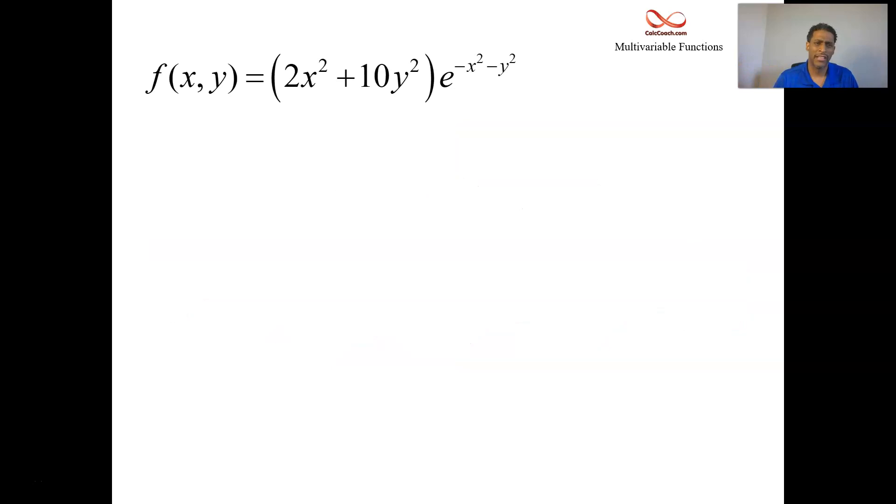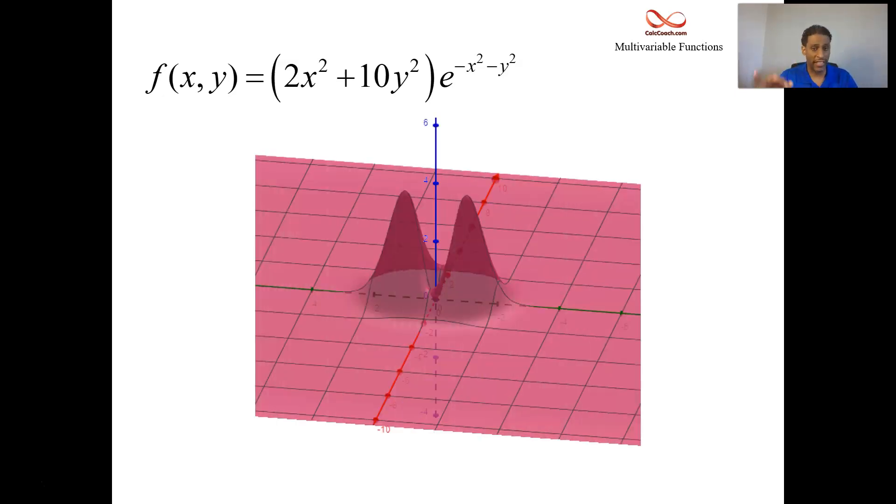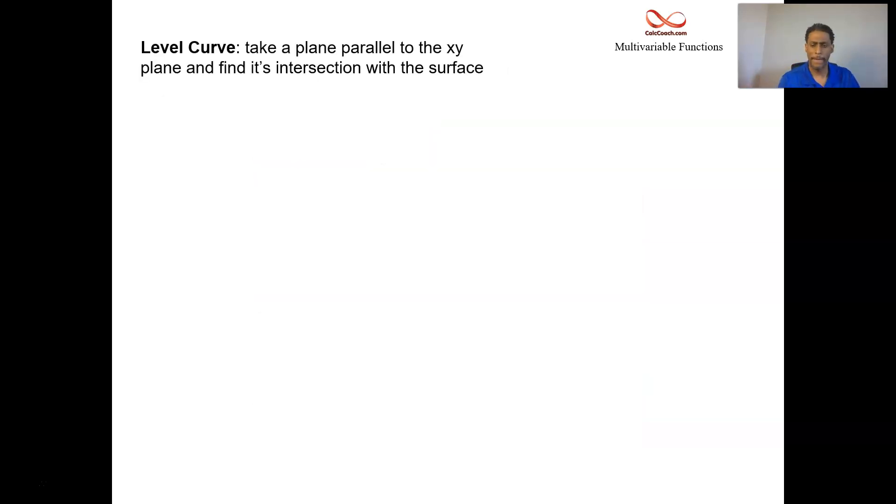Here's another one. 2x squared plus 10y squared, all of that times e to the negative x squared minus y squared. A better way to think about that is this parentheses is divided by e to the x squared plus y squared. And so we have the following 3D graph. What we'll be looking at in the coming days is, how do I find those peaks? There's a valley down at the origin. What's the x and y values that give me those local, or in this case, absolute maximum values?